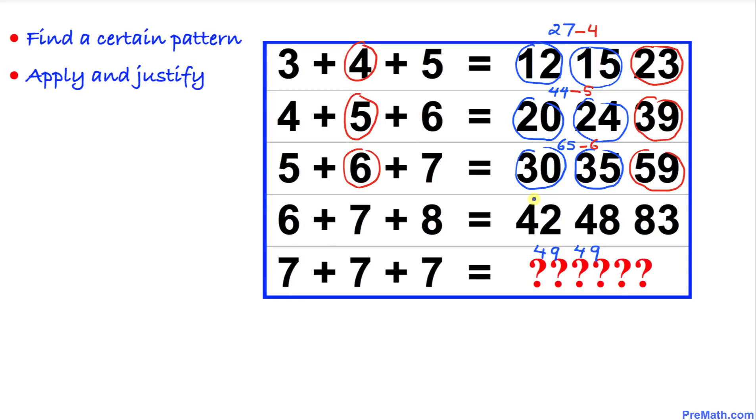And same thing, once again, we are going to add these two numbers. 42 and 48 is going to give us 90, and then we are going to take away this middle number, 7. So that is going to give us 83.